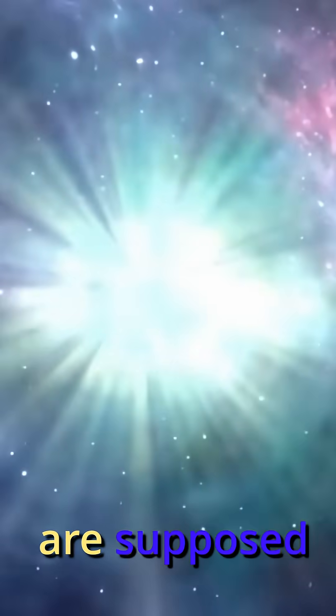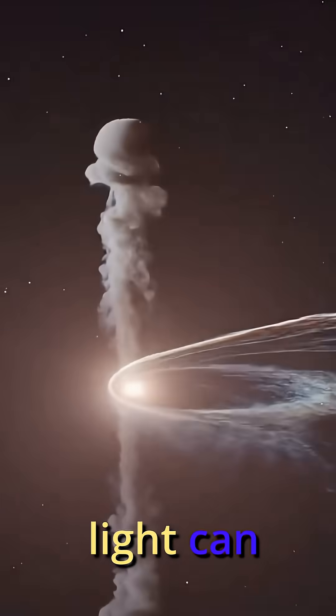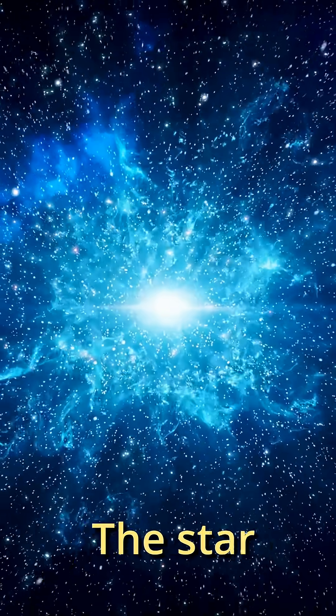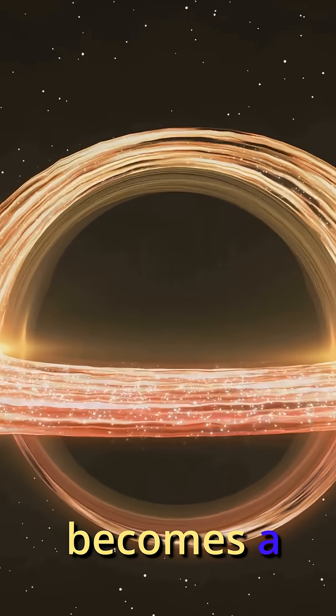You see, black holes are supposed to form when a star collapses so much that not even light can escape. But from the outside, that collapse never actually finishes. The star just slows down, fades out, and never quite becomes a black hole.